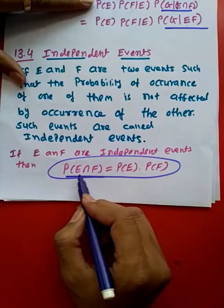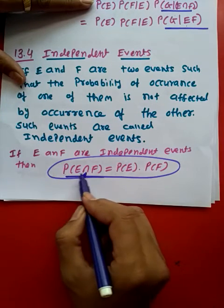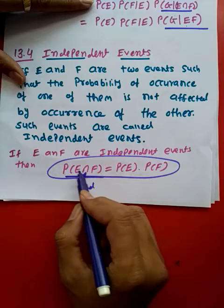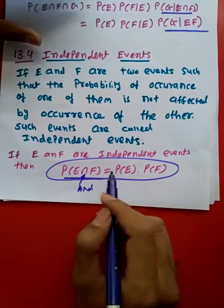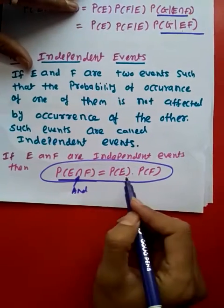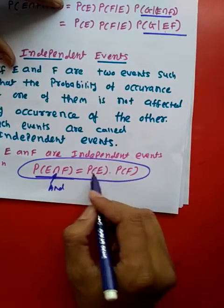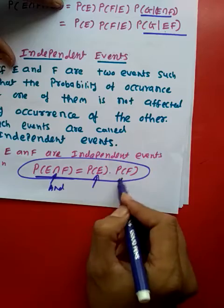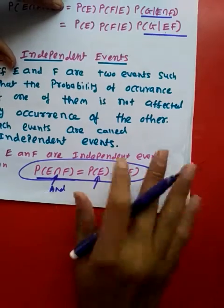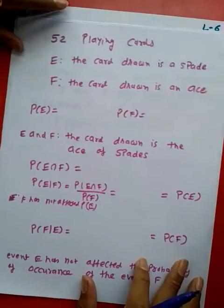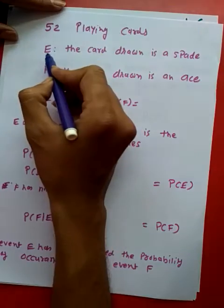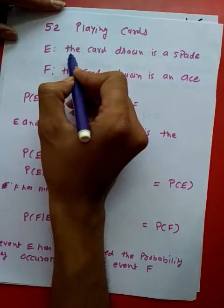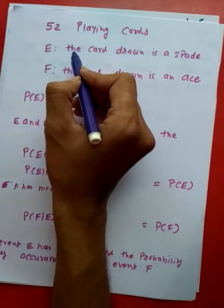For independent event, this equation you should remember: P of E intersection F. This is like 'and', meaning P of E event and F event, both. What are the chances? For independent event, it is simple multiplication of their individual probability. I want to explain this with one more example. Let us say we have 52 playing cards. And let us say event E is the card drawn...